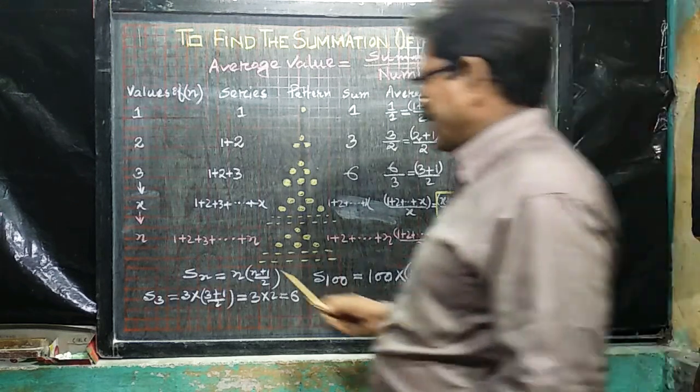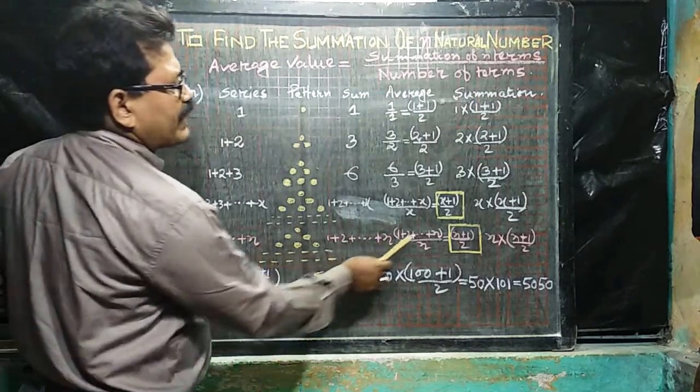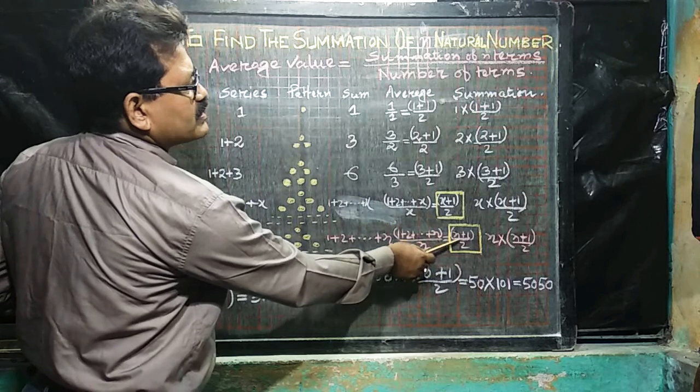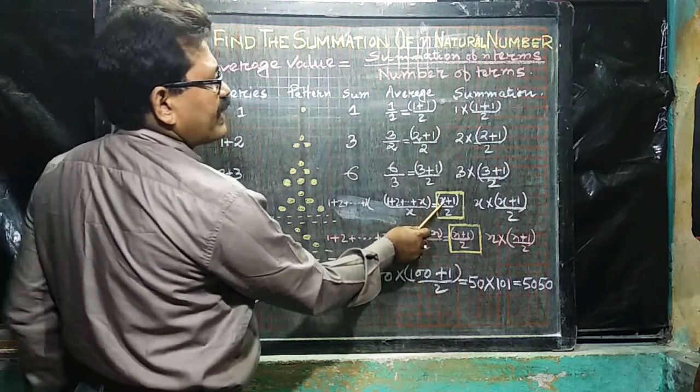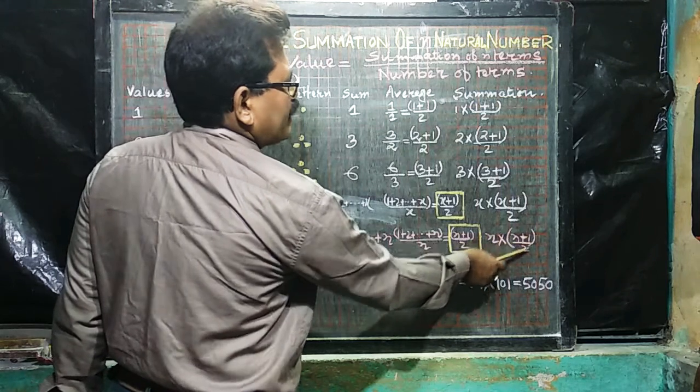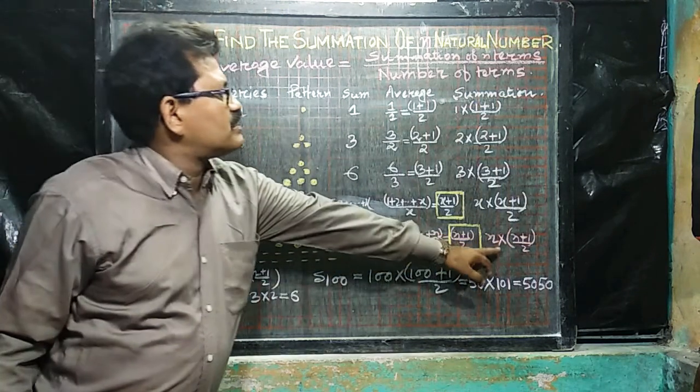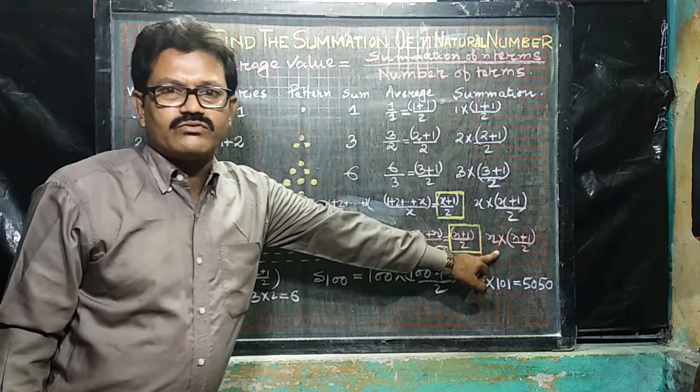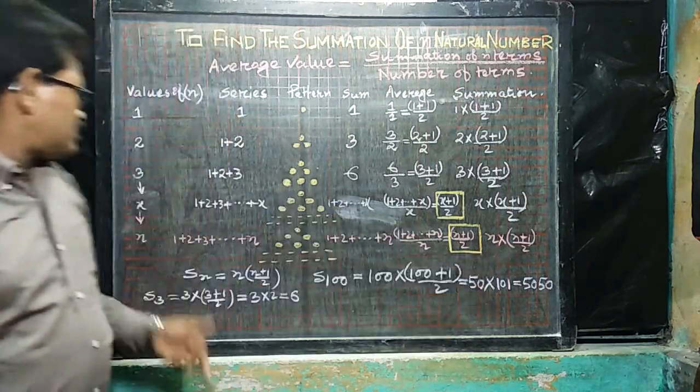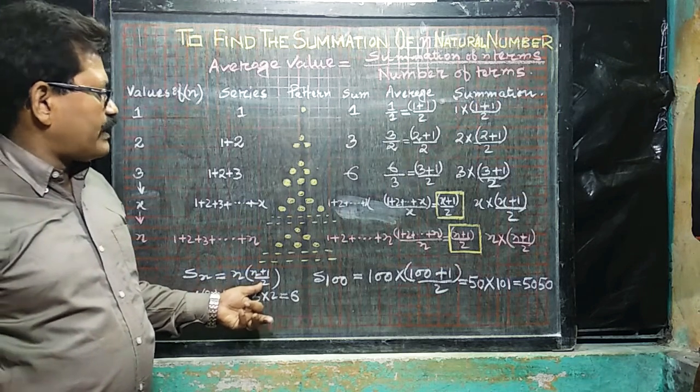So, for nth terms, n terms, 1 plus 2, dot dot dot n, that can be written as, in the same format, instead of x, we can write here n, n into n plus 1, divided by 2. This is the S_n, summation of nth n terms, of first natural numbers. So, S_n is equal to n multiplied by n plus 1, divided by 2.